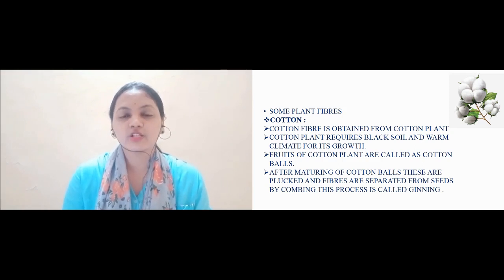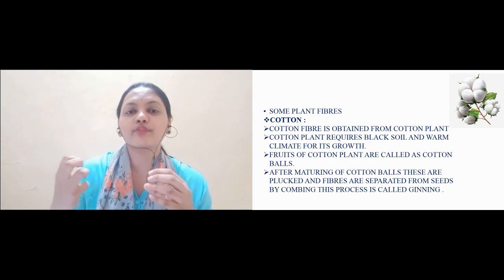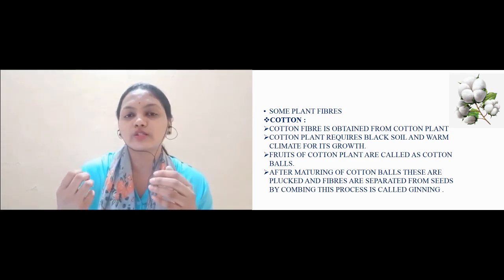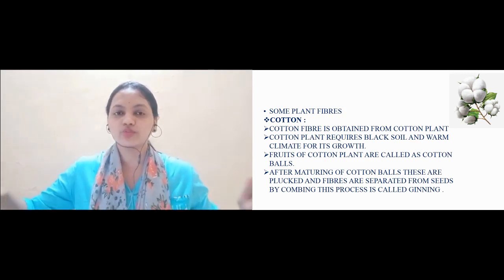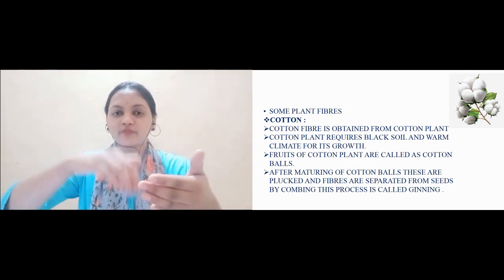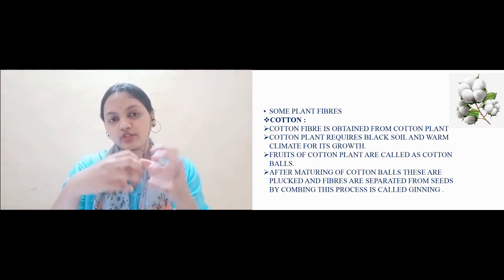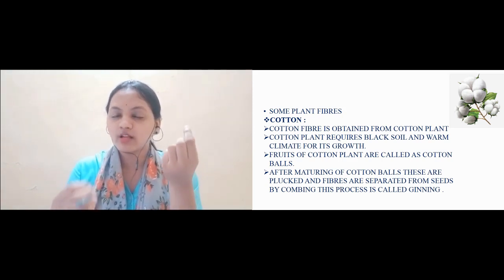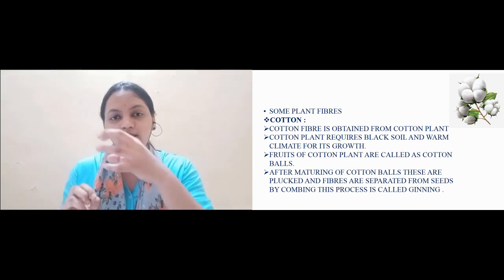The fiber is separated from the seed with the help of a process known as combing. A long comb is used, and scraping is done on the seeds to remove the fibers of cotton from the seed.